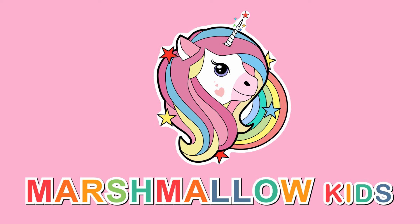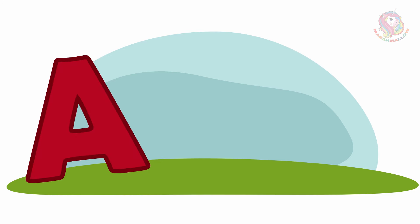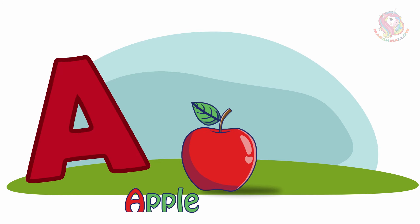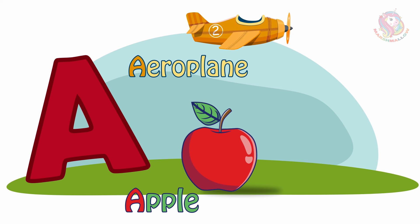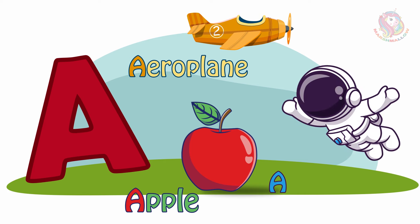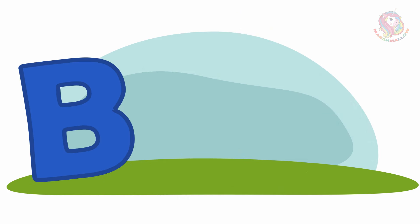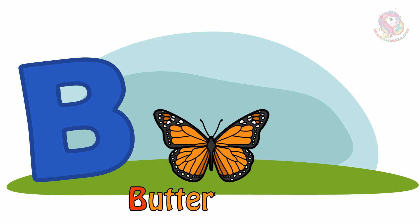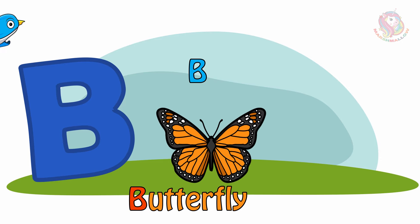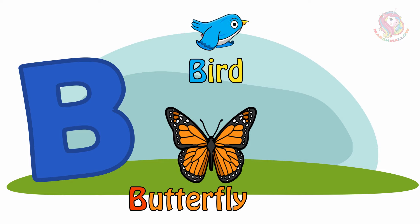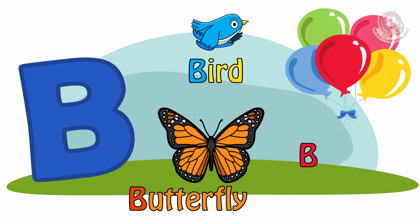Marshmallow Kids. A - A is for Apple. A is for Airplane. A is for Astronaut. B - B is for Butterfly. B is for Bird. B is for Balloon.